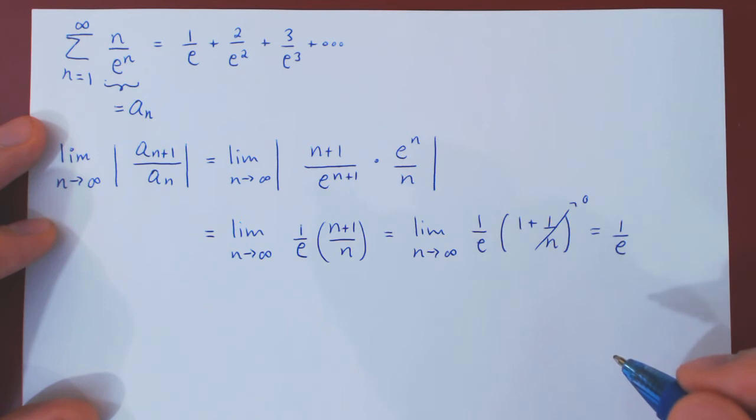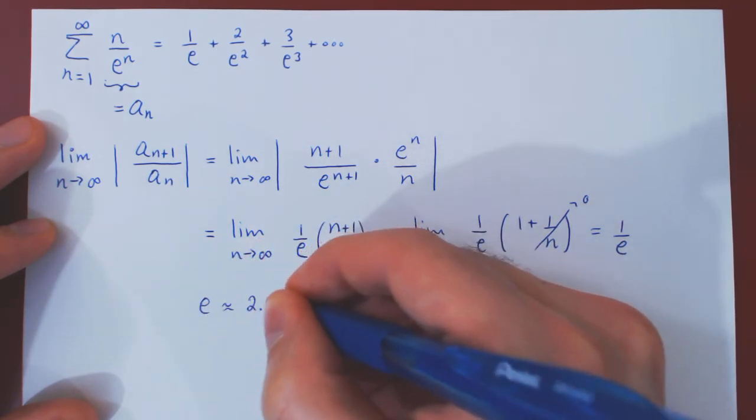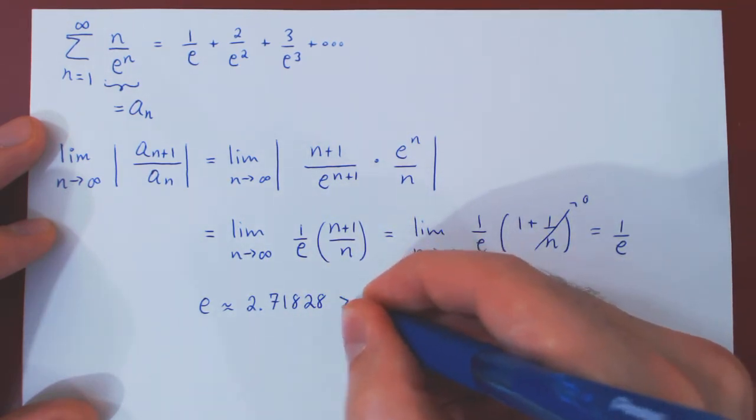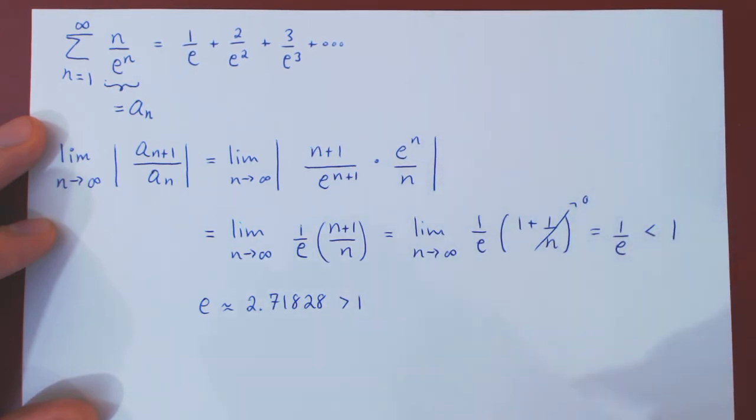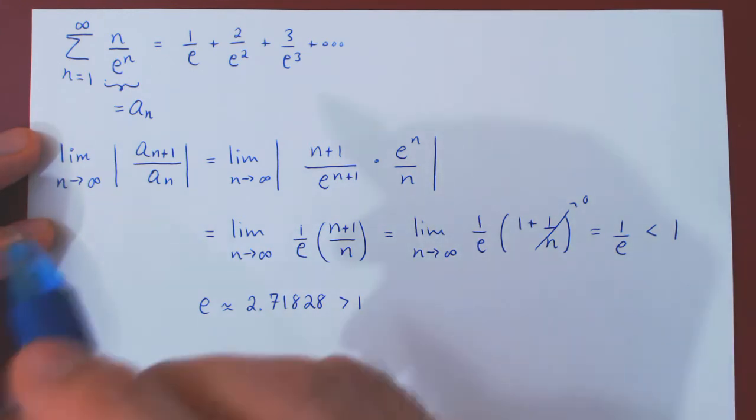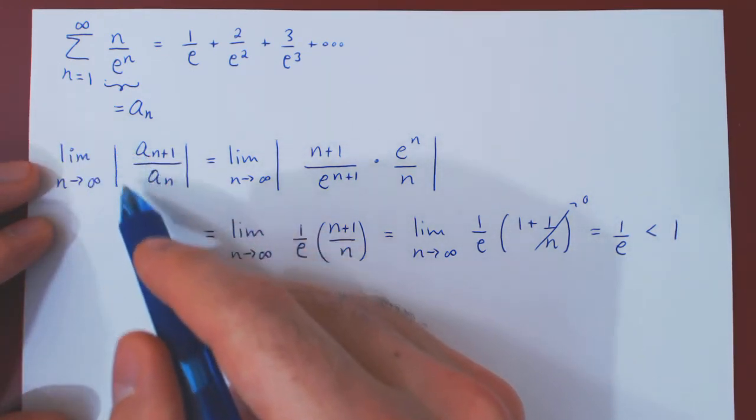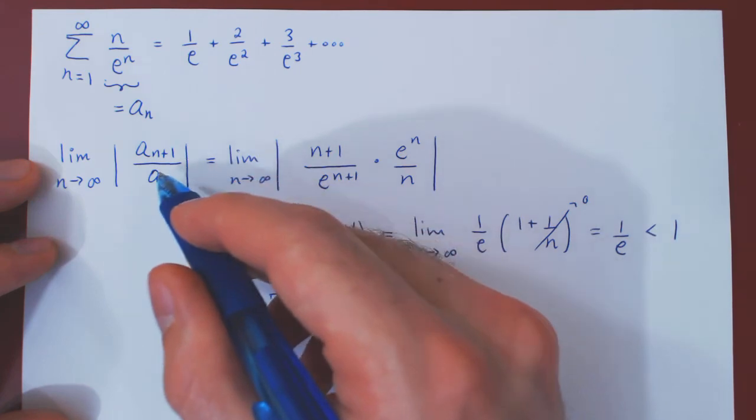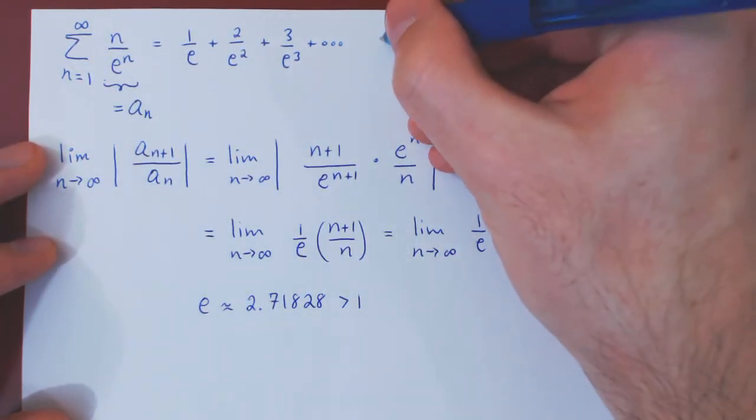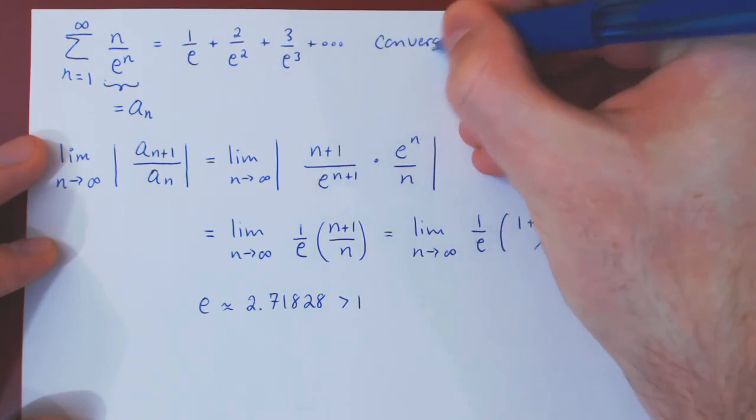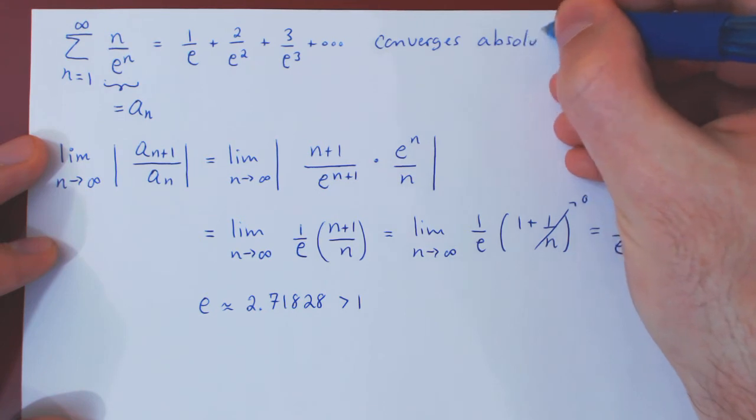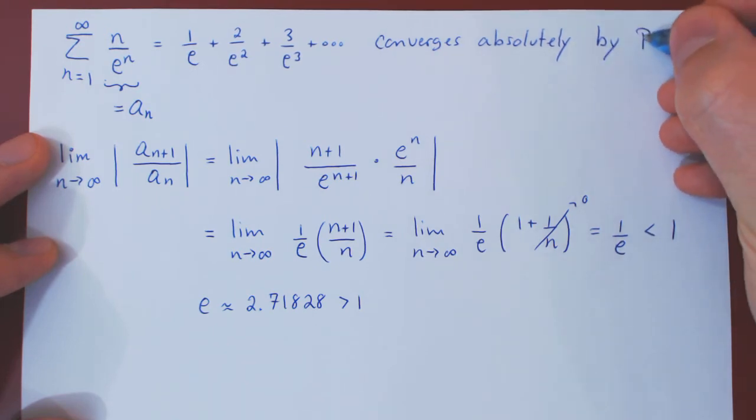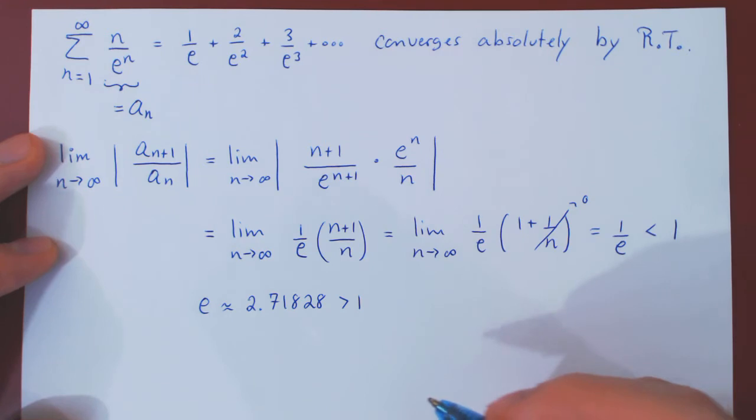And as e, if you recall, is approximately 2.71828, then e is larger than 1. Therefore, 1 over e is strictly less than 1. And if you recall, the ratio test says in the limit as n tends to infinity, if the absolute value of a_(n+1) over a_n is strictly less than 1, then the series of a_n converges absolutely. And so we're done. And of course it converges absolutely by the ratio test. So we can simply write R.T. for ratio test. And that's it.